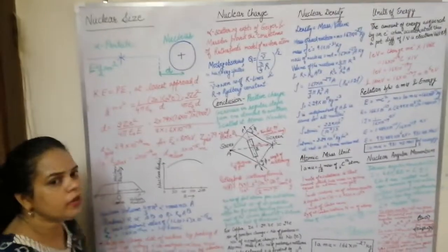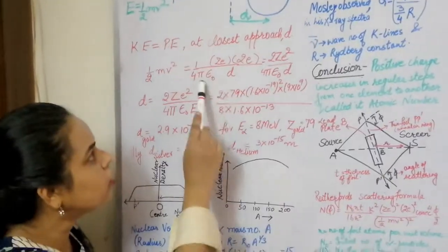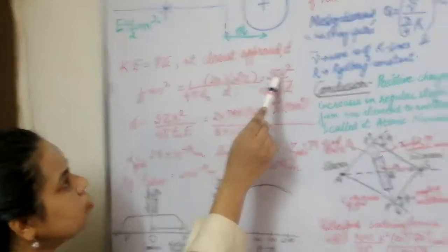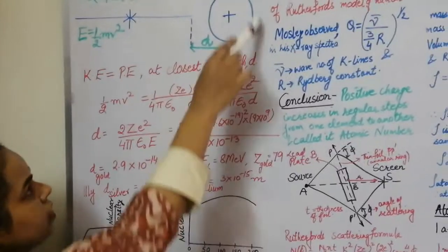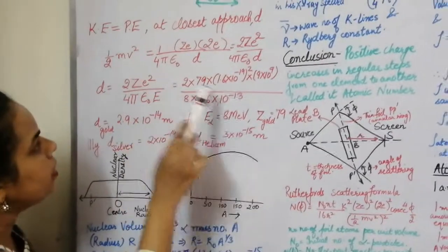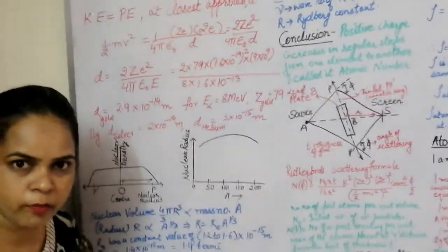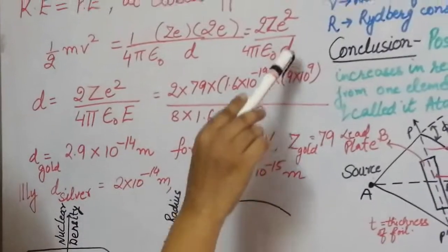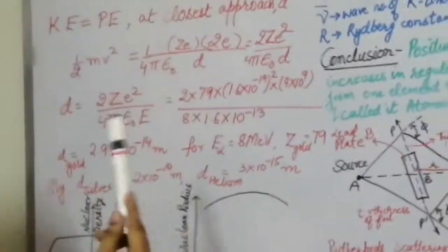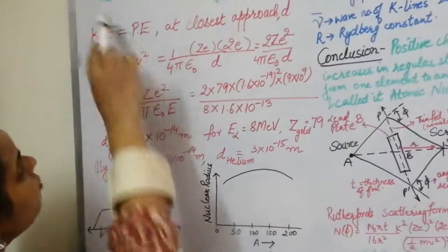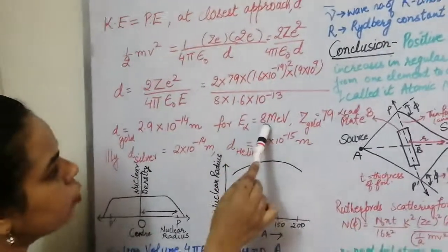At the closest approach, kinetic energy equals potential energy. Kinetic energy is given by half mv squared and potential energy is given by q1·q2 upon 4π·ε₀ into the distance d. This gives us 2Ze² upon 4π·ε₀·d. For the gold atom, Z equals 79, the electronic charge e is 1.6×10⁻¹⁹, and 1 upon 4π·ε₀ is 9×10⁹. The alpha particle kinetic energy is taken to be 8 MeV, and d comes out to be 2.9×10⁻¹⁴ meters.